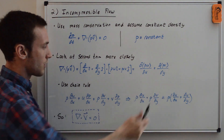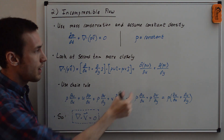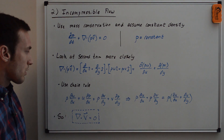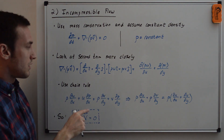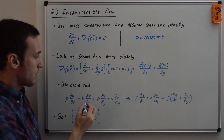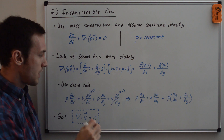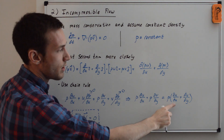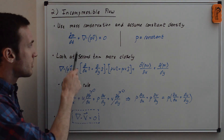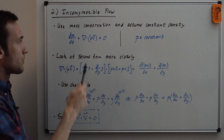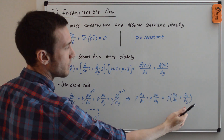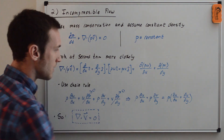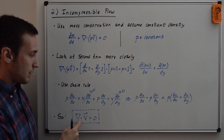Now applying the incompressible assumption, the density derivatives are zero, so those terms drop out. We're left with rho (du/dx + dv/dy), and factoring out density gives rho times (du/dx + dv/dy) = 0. Dividing both sides by rho, we get du/dx + dv/dy = 0, which can be written as del dot v equals zero. This is the incompressible mass conservation equation.